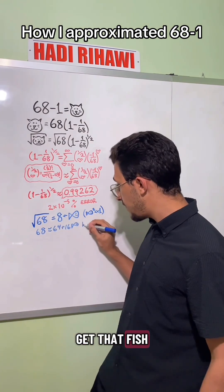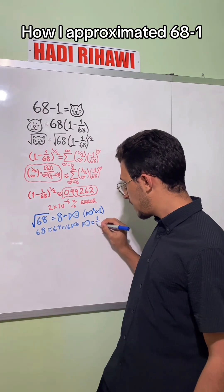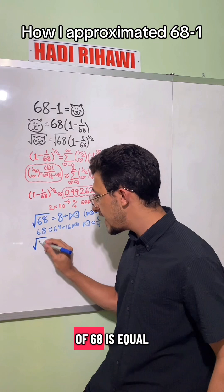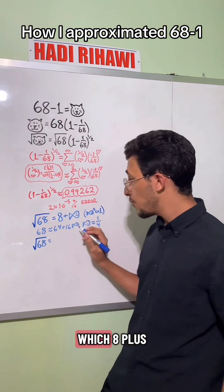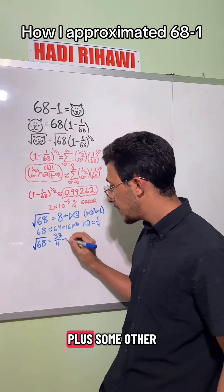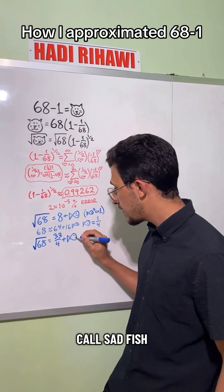We can solve for fish, we'll get that fish is approximately 1 fourth. Now we can refine our estimate to be that the square root of 68 is equal to 8 plus fish, which 8 plus 1 fourth is 33 over 4, plus some other error that we'll call sad fish.